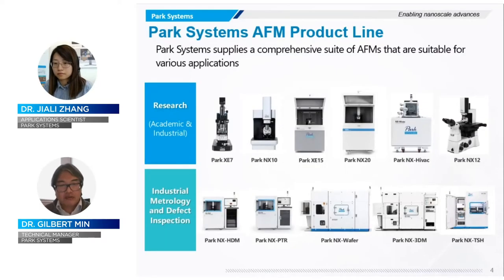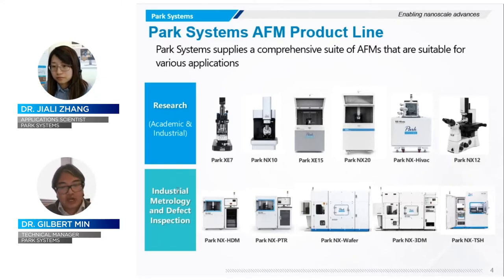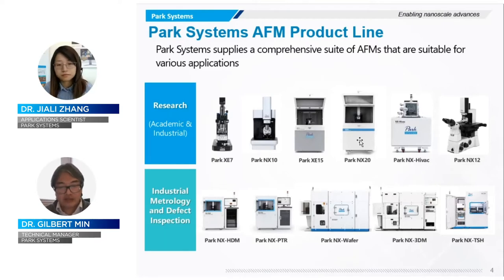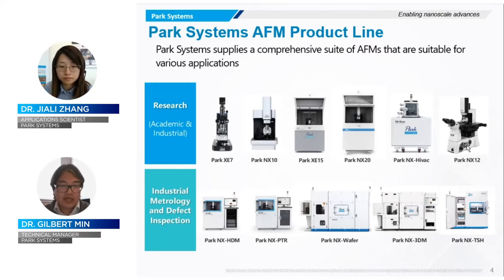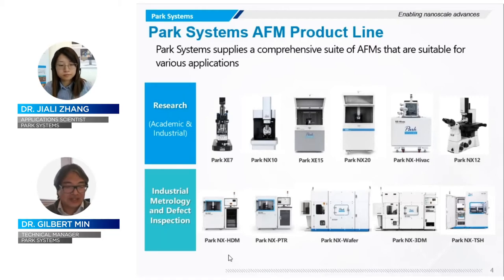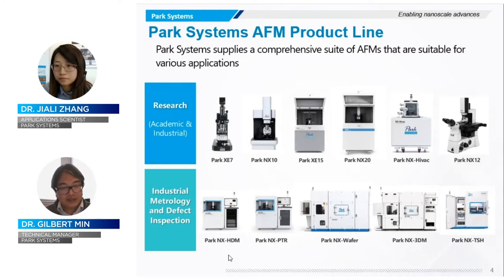We make a number of various products in the AFM line, everything from the research side to the automated industrial side. On the research side, we make small sample AFMs and a large stage sample handler for wafers up to about 300 millimeters. We also have high vacuum systems and can integrate the AFM into an inverted light microscope. The bottom row shows more automated AFMs for the semiconductor industry, with options like robot handlers, fully automated tip exchange, batch recipe measurements, and automatic defect review.